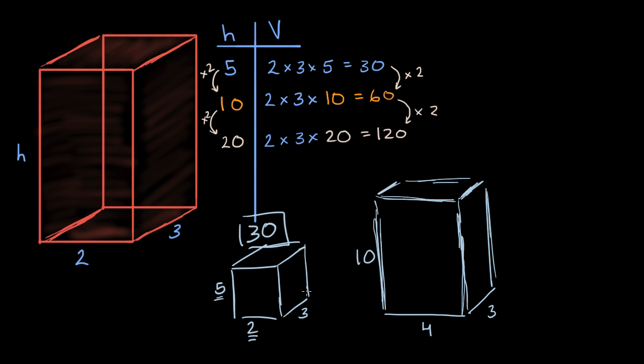What is the volume gonna be now? Pause this video and see if you can figure it out. Well, four times three is 12 times 10 is 120. So notice, when we doubled two of the dimensions, we actually quadrupled our total volume.